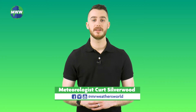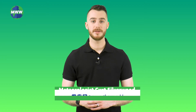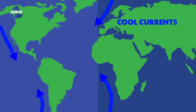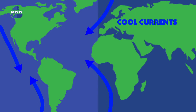In both hemispheres, along the west coast of the continents, there are cold ocean currents due to cool water being brought from the polar regions. Along the east coast of the continents, there are warm ocean currents due to warm water being brought from the equator.